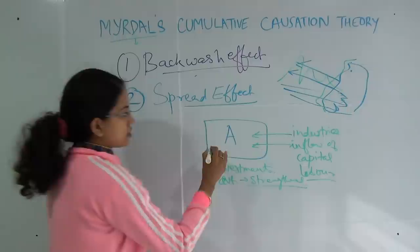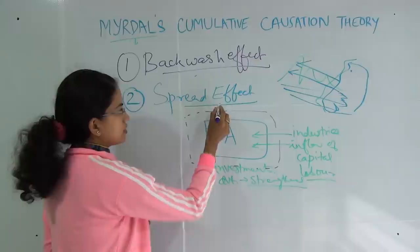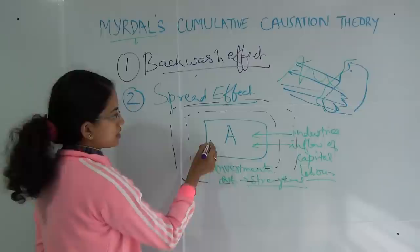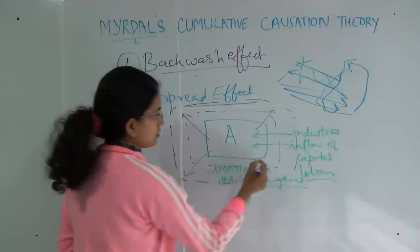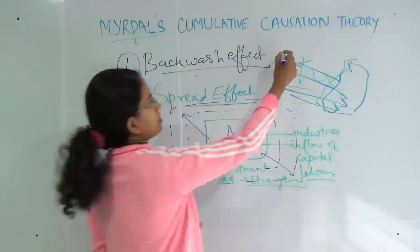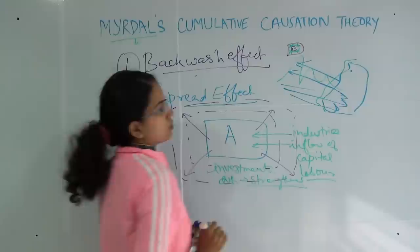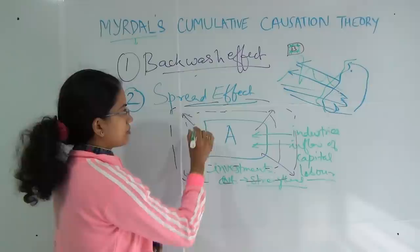So this region, which was initially at a lower level, would slowly and gradually increase in development. And this would further increase over time. This is the spread effect as given by Myrdal. Region A is slowly and gradually increasing as compared to region B, which was slowly and gradually collapsing. Since there is an outflow of people from region B, there is no one interested to work there, so it would have a backwash effect and would squeeze down.